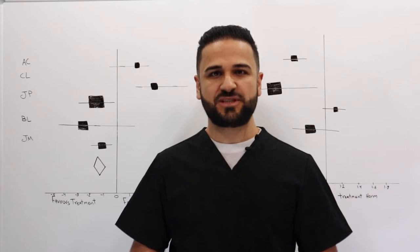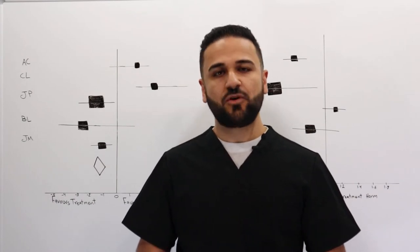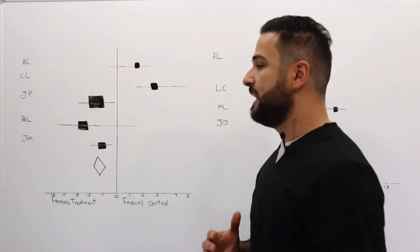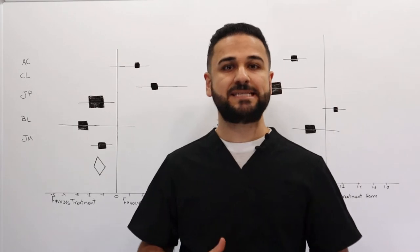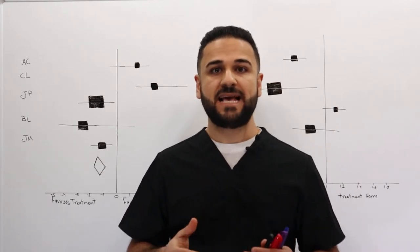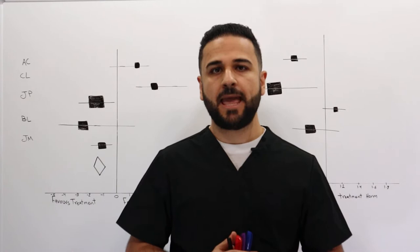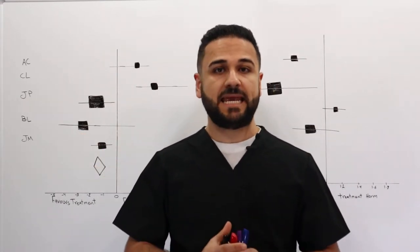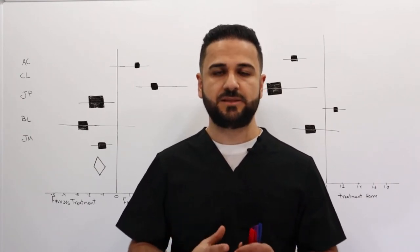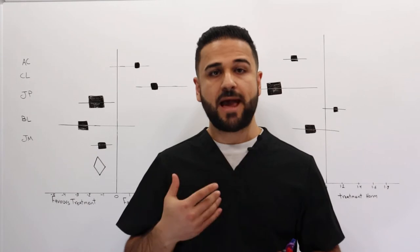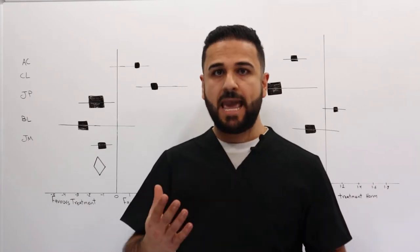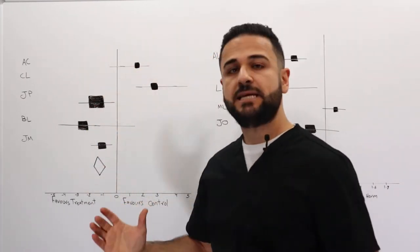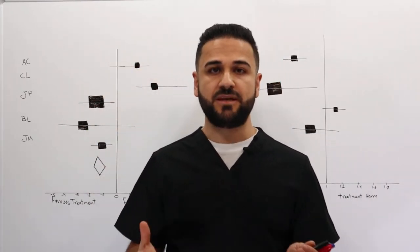Hi everyone, today's lecture is about forest plots. It is called a forest plot because it produces a forest of lines. What a forest plot does is essentially summarize data from different studies that are asking the same question. An example of this is seen in meta-analysis, which takes different studies asking the same question and represents the conclusion through a forest plot image.